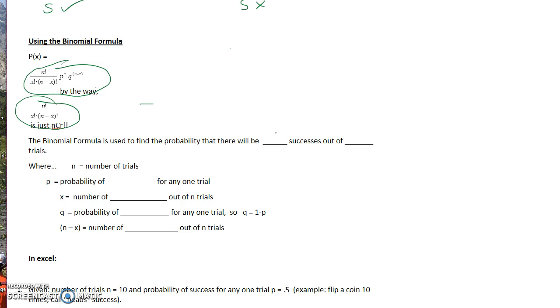So the binomial formula is used to find the probability that there will be X successes out of N trials. Now we're going to break down some of this notation. It's going to be really important that we understand what these letters mean. So N is the number of trials. P will be the probability of success. X will be the number of successes.